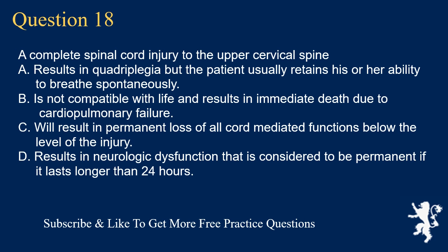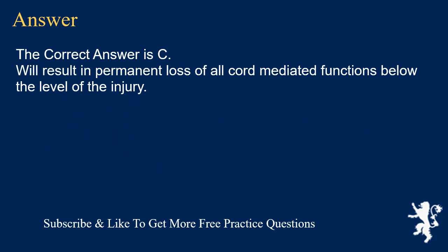Question 18. A complete spinal cord injury to the upper cervical spine: A. Results in quadriplegia but the patient usually retains his or her ability to breathe spontaneously. B. Is not compatible with life and results in immediate death due to cardiopulmonary failure. C. Will result in permanent loss of all cord-mediated functions below the level of the injury. D. Results in neurologic dysfunction that is considered permanent if it lasts longer than 24 hours. The correct answer is C. Will result in permanent loss of all cord-mediated functions below the level of the injury.